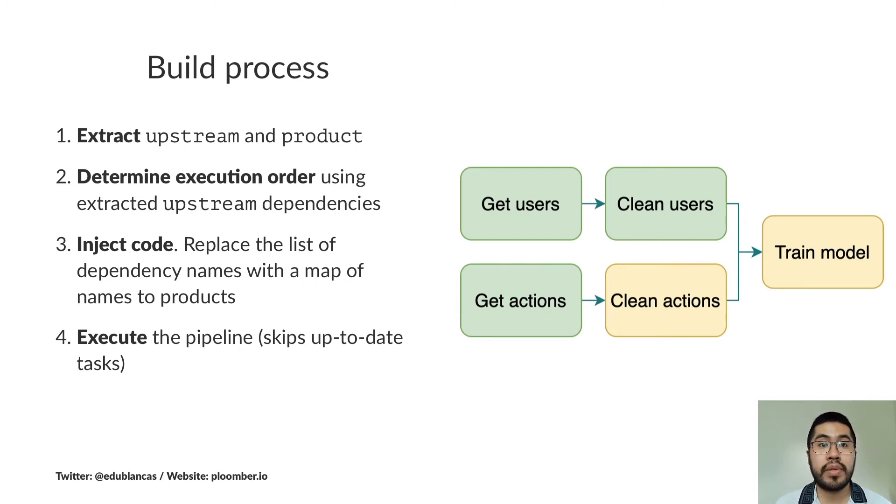The good thing about Plumber is that it's going to skip up-to-date tasks, meaning it's not going to run tasks whose source code hasn't changed. For example, in this pipeline, if you modify the source code for clean actions, you only have to run clean actions and train models. You don't have to run any of the other steps. This is going to save a lot of time, especially when your tasks take a lot of time to run or where you have a dozen or even more tasks in your pipeline.